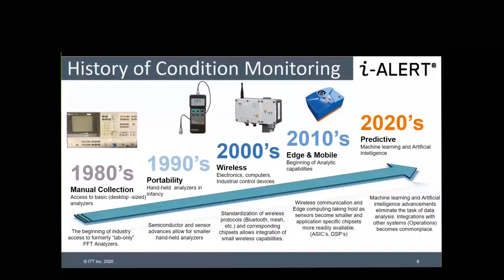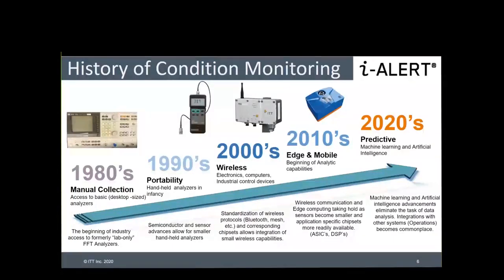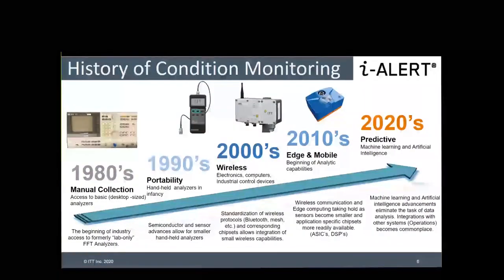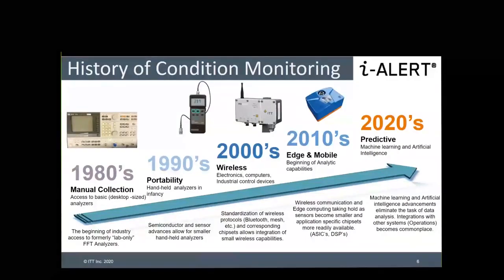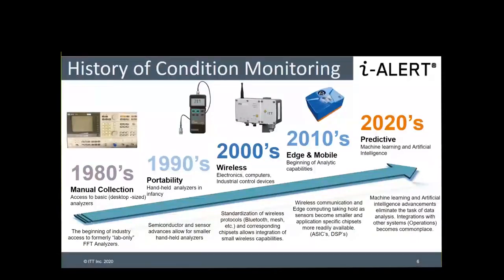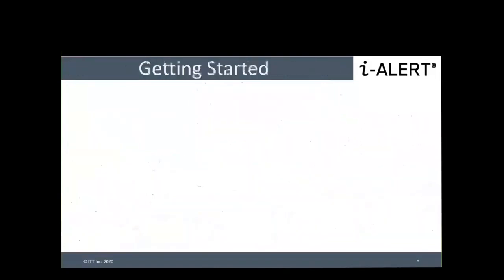Coming into the 2010s and 2020s, smaller technologies have become available. Data analytics and artificial intelligence have started to develop, moving measurement devices from the large equipment of the 80s and 90s into very small-sized technologies. Wireless communications have also changed in how we transmit data. Ultimately, as devices become smaller and more cost-effective, you can start to cover more and more of the plant.